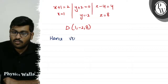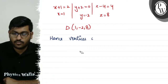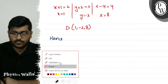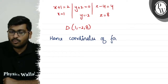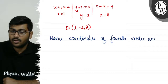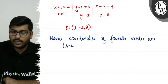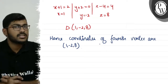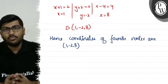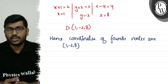Hence, the coordinates of the fourth vertex D are (1, -2, 8). So this is the explanation for the solution. I hope you understood the explanation. Thank you.